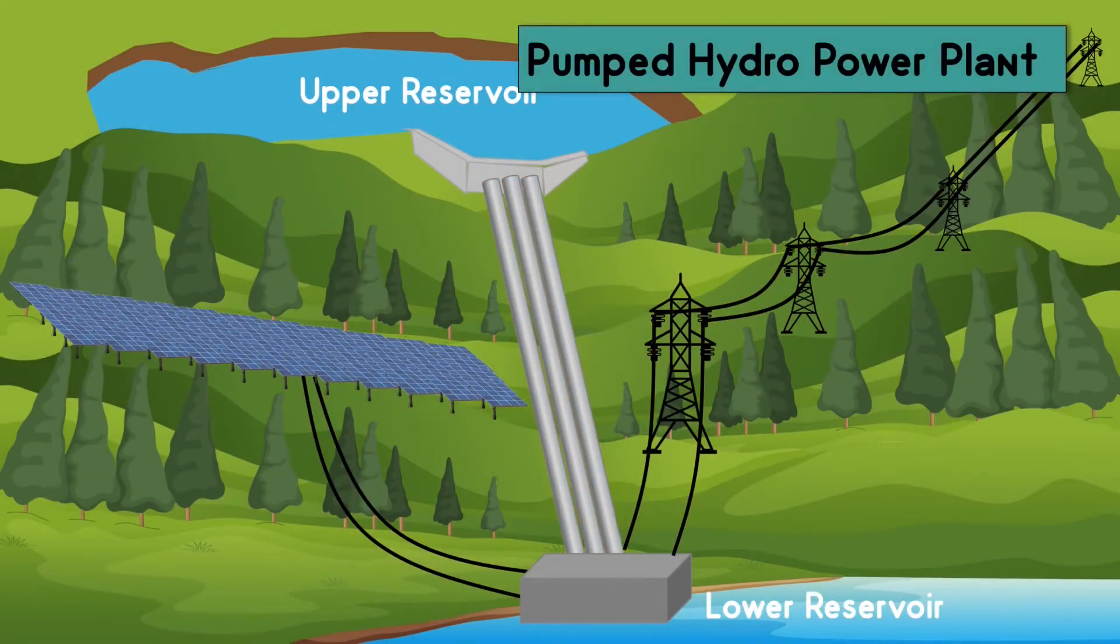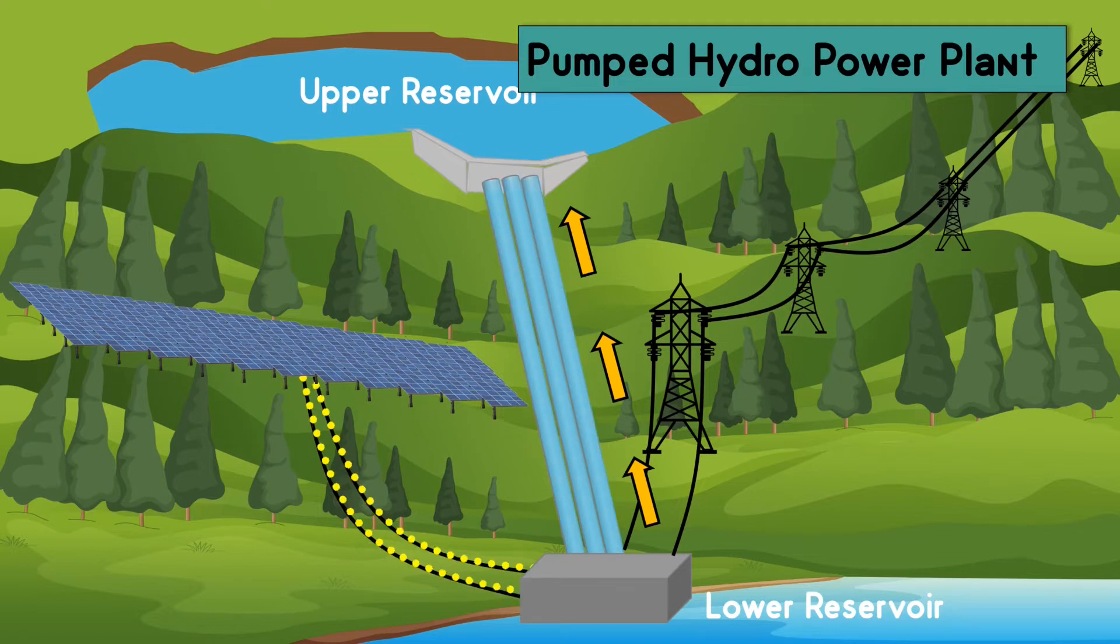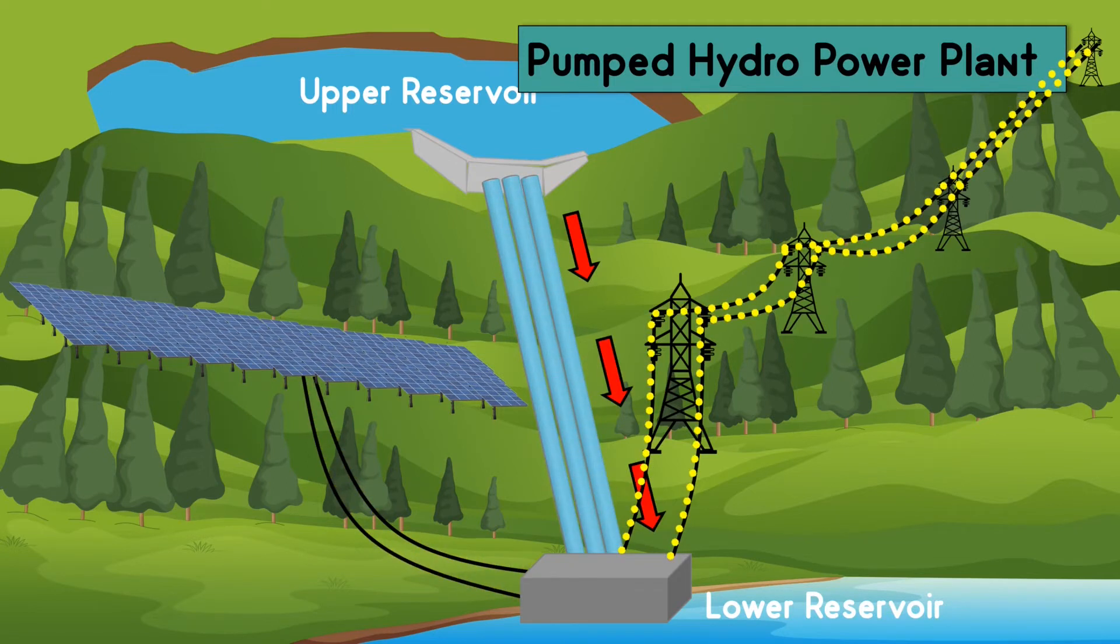The actual concept is when electricity demand is low, the pumped storage hydropower plant stores energy by pumping water to the upper reservoir. When electricity demand is high, this water is used to run the turbine.